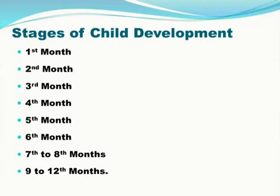Stages of child development: 1. Head starts and needs support. 2. Waves arms about. 3. Looks at people and follows their movement. 4. Holds head alert. 5. Puts everything into the mouth. 6. Recognizes constant members of the family — 7 to 8 months: uses toys freely. 9 to 12 months: they crawl very well.